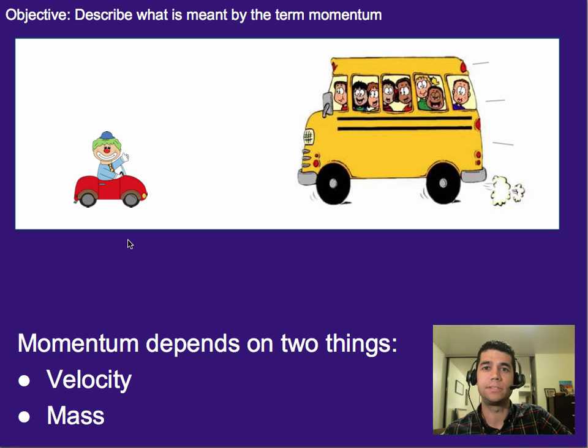I also like to think of momentum as how hard it is to stop something. If it has a ton of momentum, mainly because of its speed or because of its mass or both, then it's really hard to stop. If it's moving slow but is really big, it's still really hard to stop. And that's where we can account for those two things.